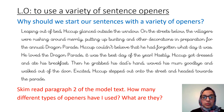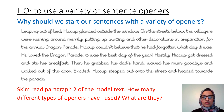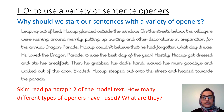In a while, I would like you to skim read paragraph two of the model text. You can find it in your packs or it's here on the screen. I want you to have a look — how many different types of openers have I used, and what are they? You can either underline them or jot them down on your whiteboard or in your home learning book. Pause this video and have a look.